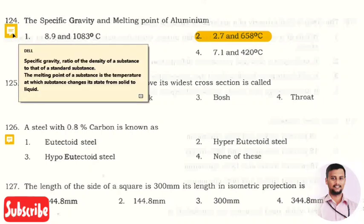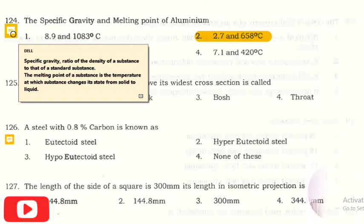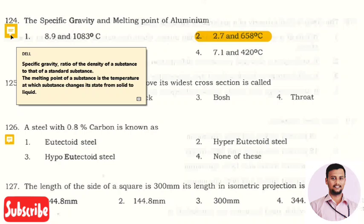What is this specific gravity? It is a ratio of density of a substance to the density of a standard substance. Then what is this melting point? The melting point is the temperature at which the substance changes its state from solid to liquid. That is the melting point.